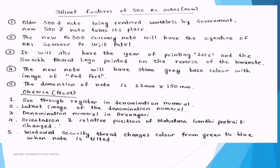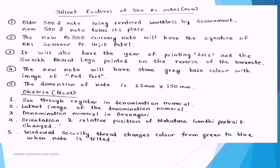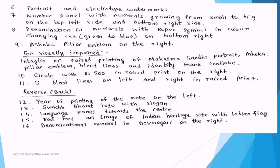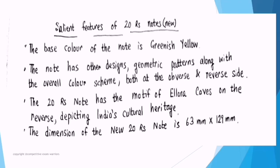Now let's discuss the 500 rupees note. The older 500 rupee notes have been rendered worthless by the government — old 500 notes are no longer legal tender and have been replaced by new 500 notes. The new 500 note is smaller compared to the previous version and bears the signature of then-governor Urjit Patel of RBI, the year of printing 2016, and the Swachh Bharat logo on the reverse. The new note has a stone gray base color, which is important to remember. The dimension is 60 millimeter by 150 millimeter. On the reverse, there is year of printing, Swachh Bharat logo with slogan, language panel, Red Fort, and the denomination numeral — all present on the back side.